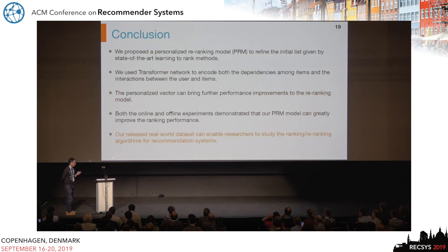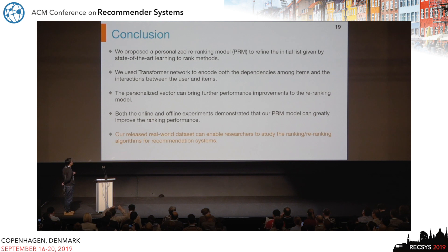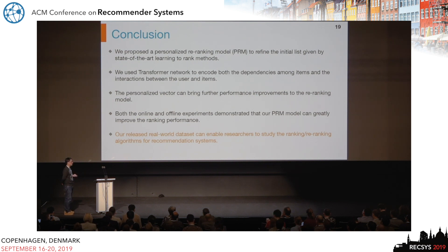In conclusion, we propose a personalized re-ranking method to refine the initial list given by state-of-the-art ranking methods. We use a transformer network to encode dependencies between items directly. The personalized vector is a key component of our model. We also release a real-world re-ranking dataset to support future research on re-ranking systems.